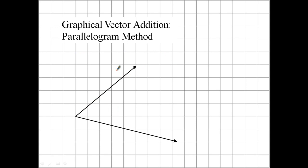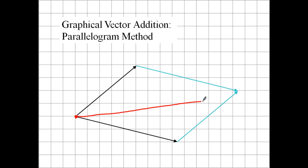Parallelogram method with this second example. We're going to create a mirror image of this vector — just slide it down. As long as its direction is the same and its length is the same, we're all good. So that's what we did: mirror image of this one over here, still in the same direction, still the same length. Mirror image of this one up here, same direction, same length. And we connect this point to this point — that's what our resultant looks like.